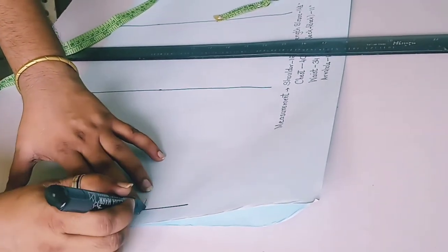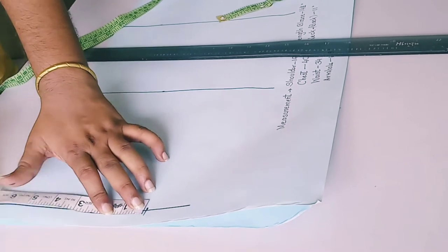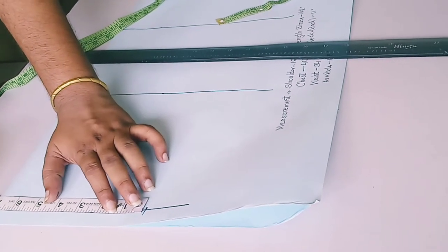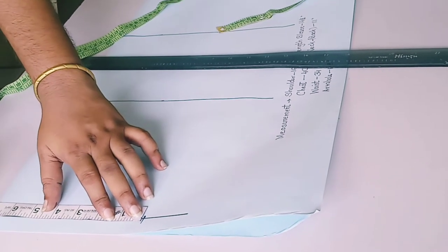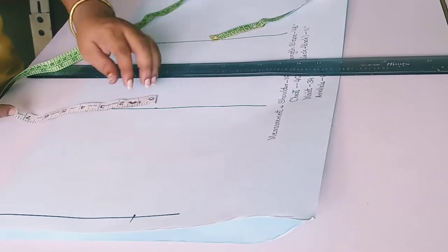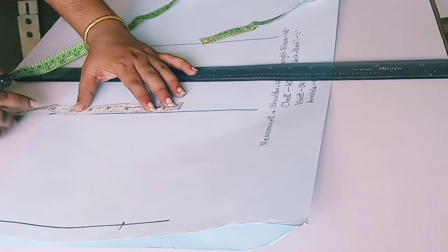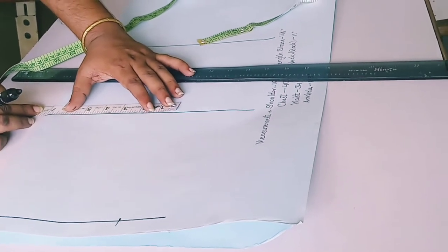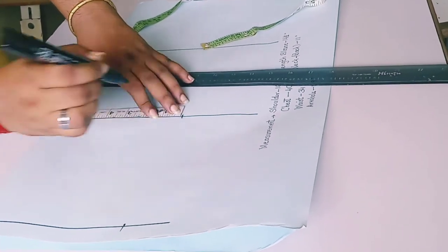Now mark your shoulder 14 inch. Half of 14 is 7. You must be questioning me why 14 when we have taken the measurement 16 inch, but we are taking 14 because our neck is deep.